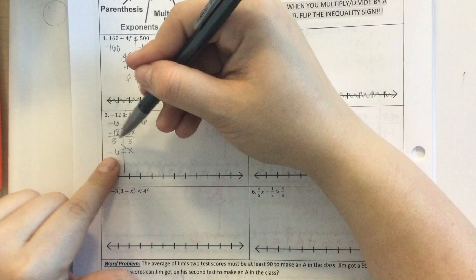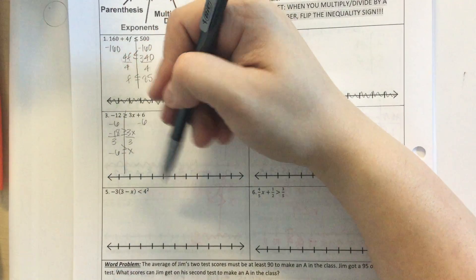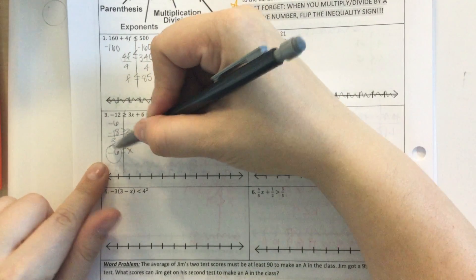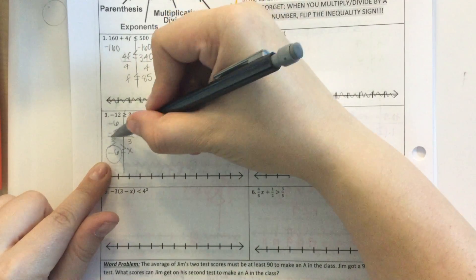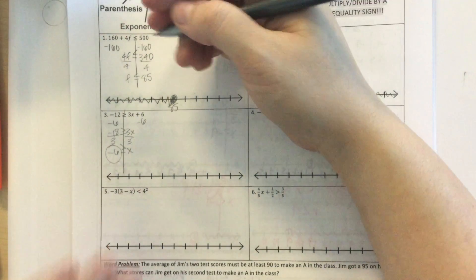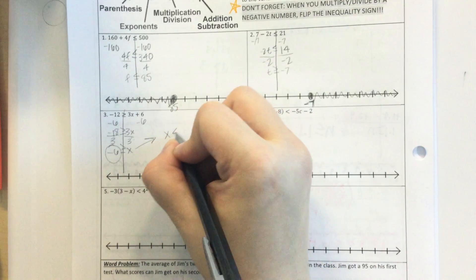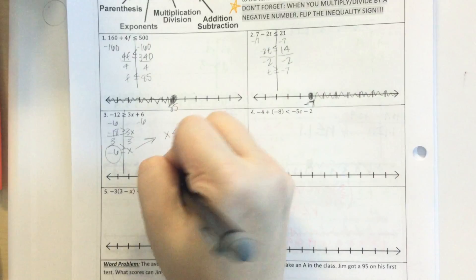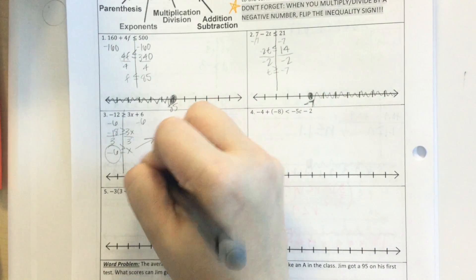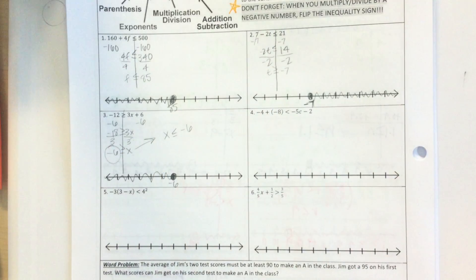My solution over here is negative, but I did not divide by a negative number, so I do not flip the sign. Don't get confused by having a negative number on this side and dividing by a negative. Those are two different things. Don't get confused by that. And so when I graph it, I want the variable on the left, so I'm going to rewrite it. So I'm going to have negative 6, a closed circle, going to the left.